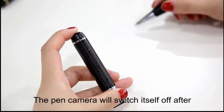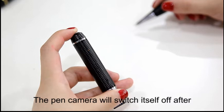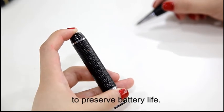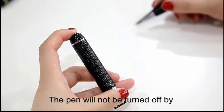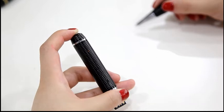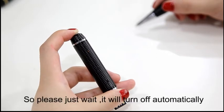The pen camera will switch itself off after 60 seconds in standby status to preserve battery life. The pen will not be turned off by pressing the button in the photo and audio mode. So please just wait, it will turn off automatically.